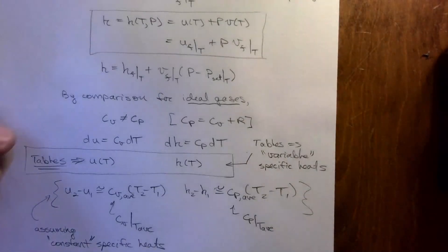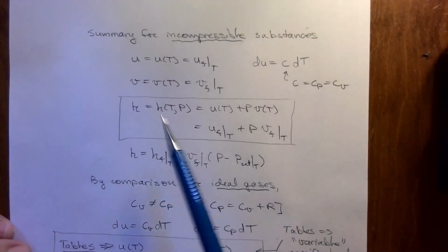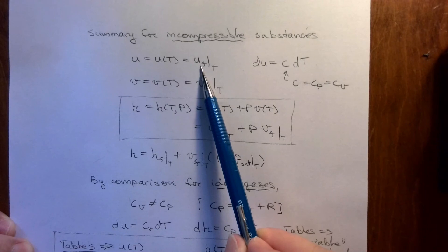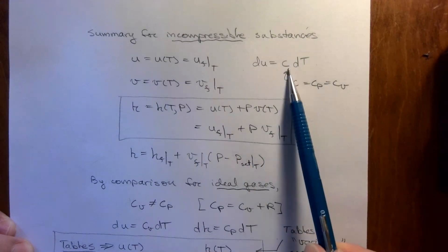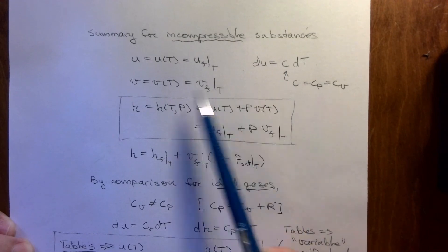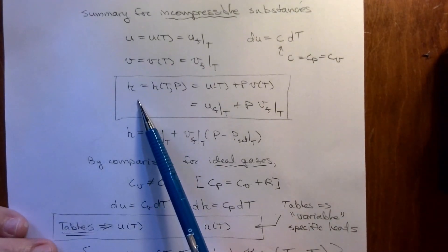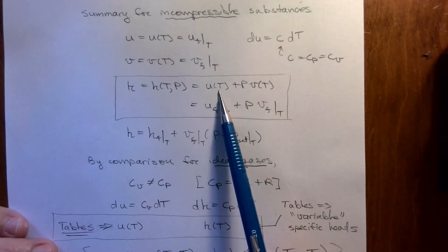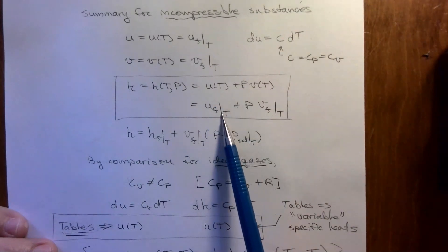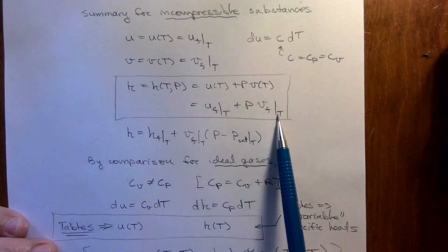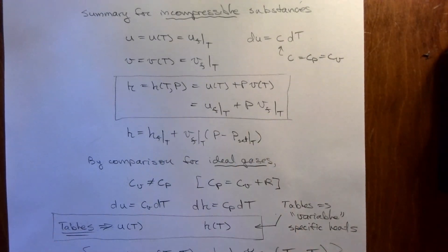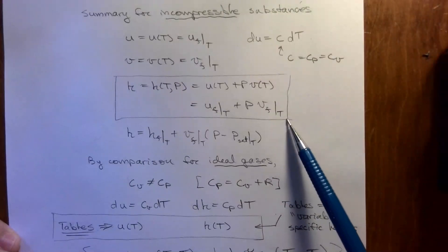In summary for incompressible substances: U equals UF at T, so U only depends on temperature; dU equals C·dT, where C equals C sub V equals C sub P. Specific volume also only depends on temperature, so V equals VF at T. H depends on pressure as well: H equals UF at T plus P times VF at T. This expression — which may not have been in the notes previously — gives the full evaluation of H for a compressed liquid.